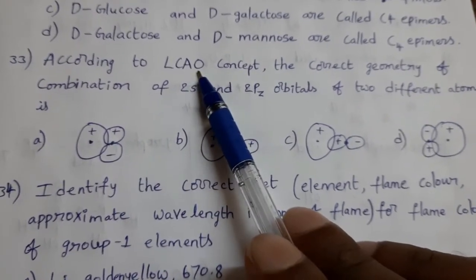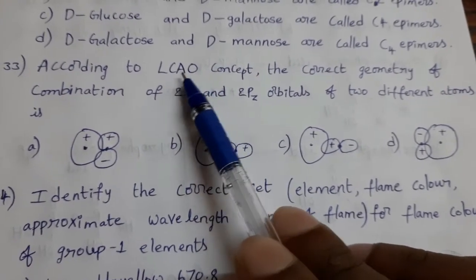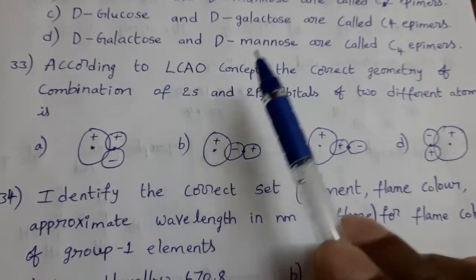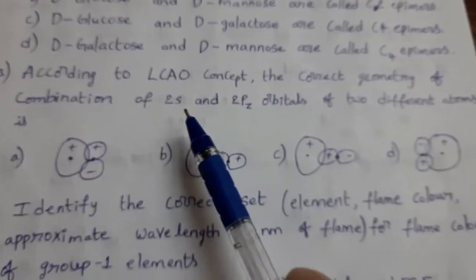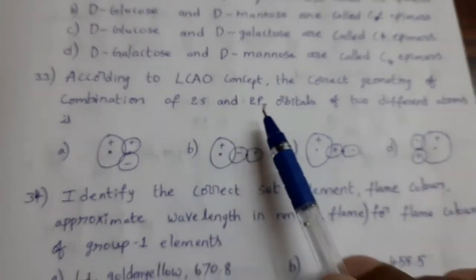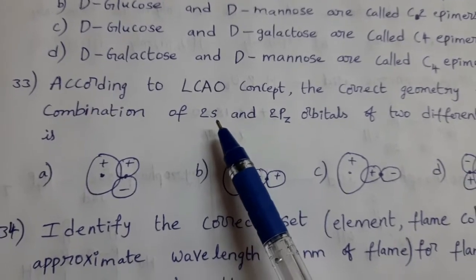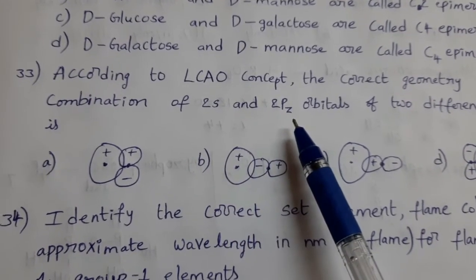LCAO concept means linear combination of atomic orbitals concept. According to this, what is the suitable combination for 2s and 2pz orbitals? 2s means s orbital, its shape is spherical. 2pz means dumbbell shape.